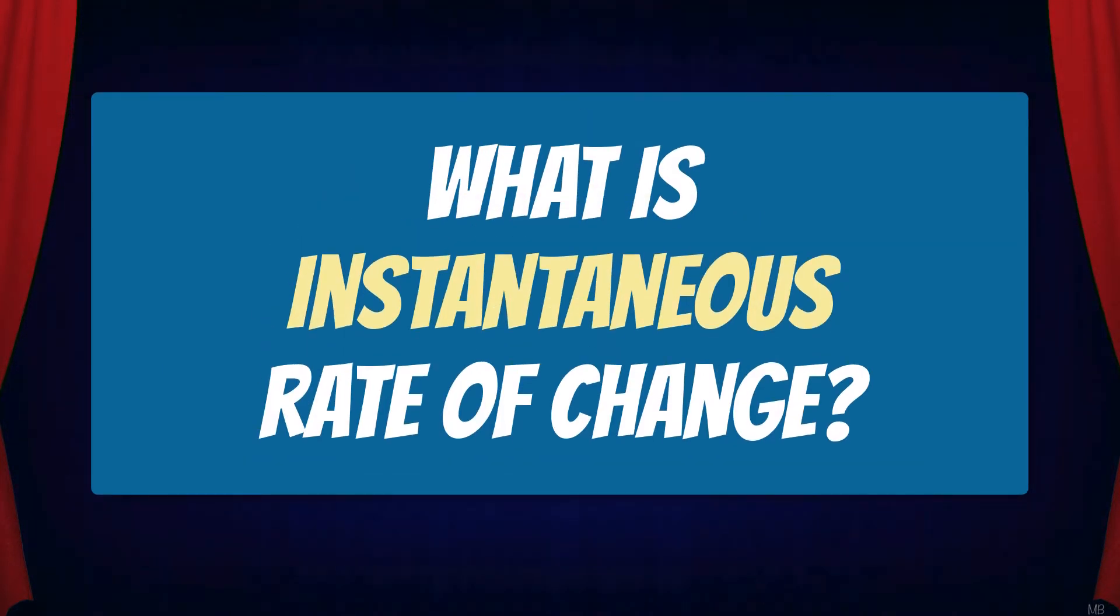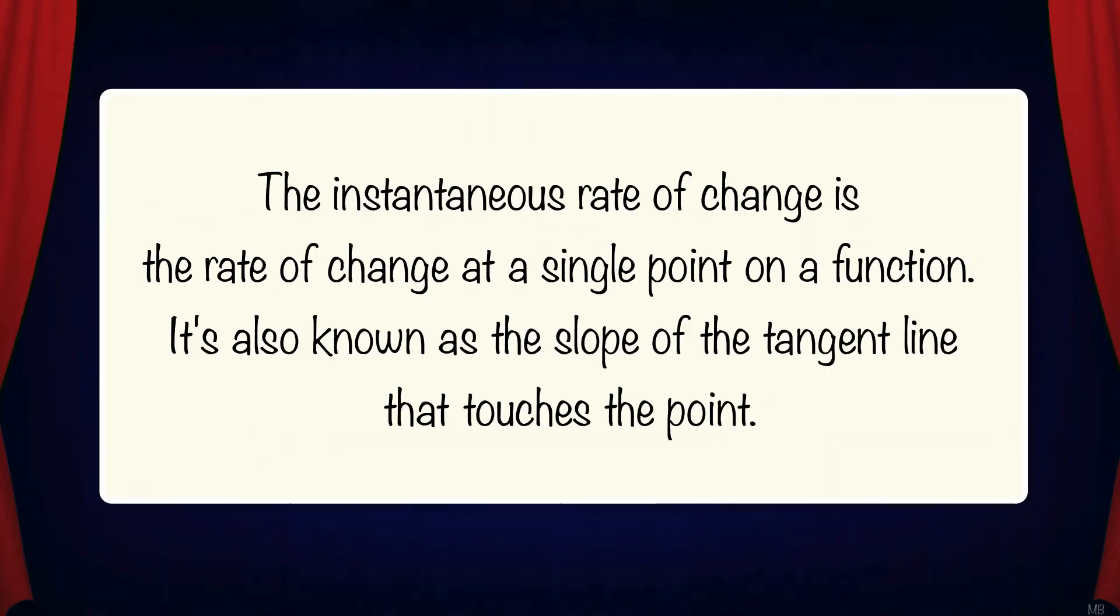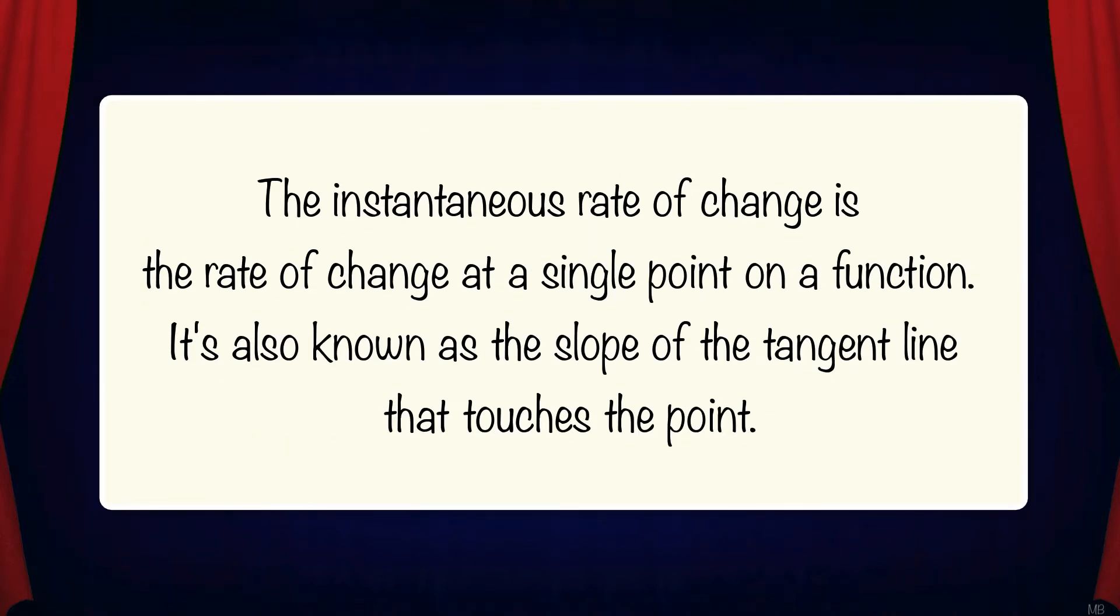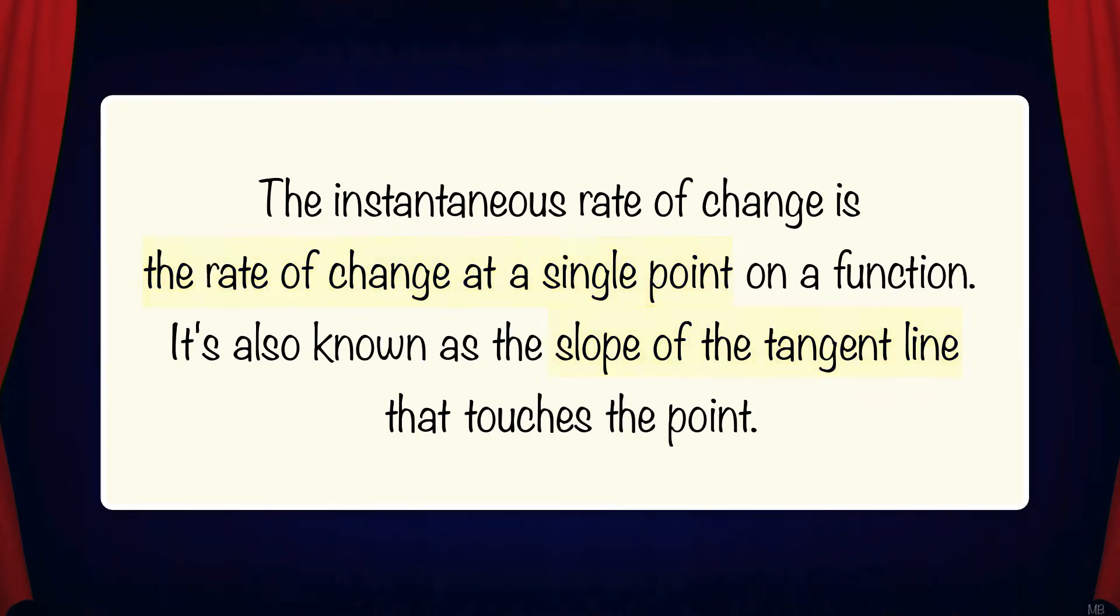But what is Instantaneous Rate of Change? The Instantaneous Rate of Change is the rate of change at a single point on a function. It's also known as the slope of the tangent line that touches the point.